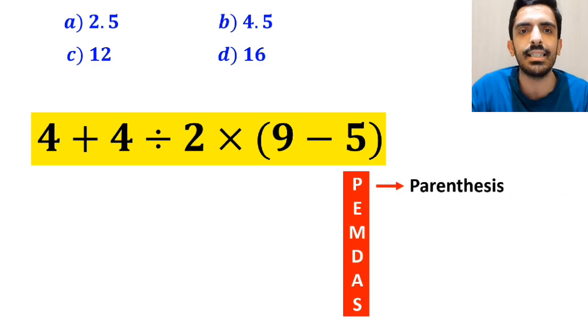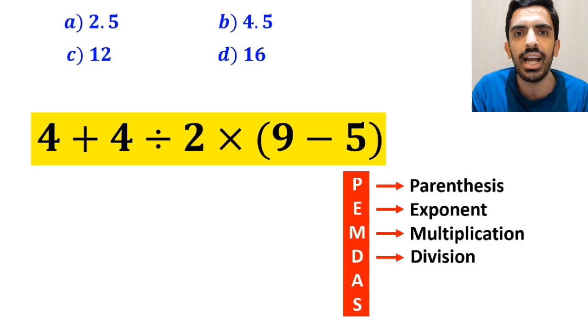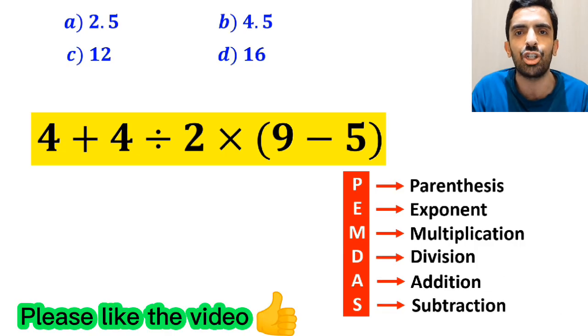In this rule, P stands for Parenthesis, E stands for Exponent, M stands for Multiplication, D stands for Division, A stands for Addition, and S stands for Subtraction.